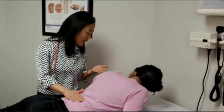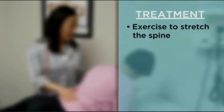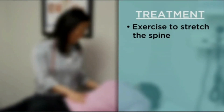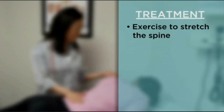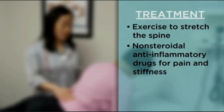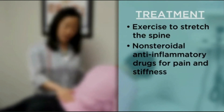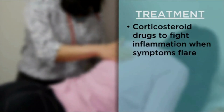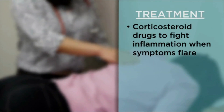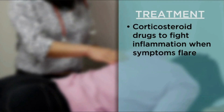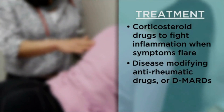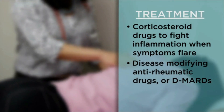There is no cure for AS, but several treatments can help. These include exercise to stretch the spine and posture exercises to keep the spine straight, as well as non-steroidal anti-inflammatory drugs (NSAIDs) for pain and stiffness. Corticosteroid drugs can fight inflammation when symptoms flare. Disease-modifying antirheumatic drugs (DMARDs) may be used if NSAIDs are not helping.